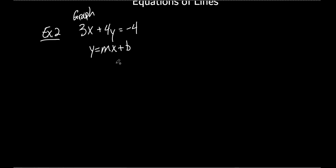So what I want to do is turn it into slope-intercept form. What's another way to say slope-intercept form? Y equals mx plus b. So I want to take that equation — 3x plus 4y equals negative 4 — and change it to slope-intercept form. Why do we want to do that? What's the purpose? What's the good thing about knowing slope-intercept form? It makes it easier to graph. Why? Because once you turn it into slope-intercept form, all you've got to do is look at it and pick out two things: the y-intercept, which is b, and the slope, which is m.